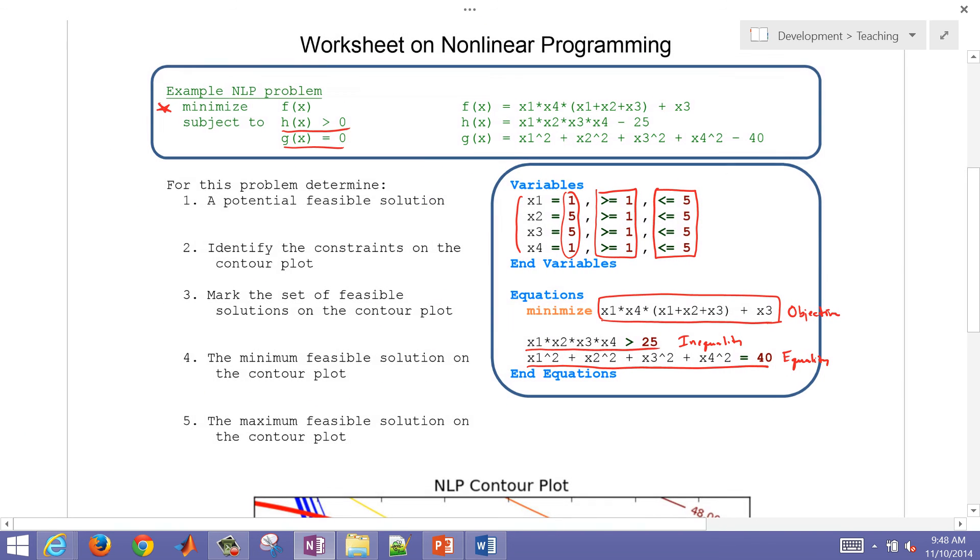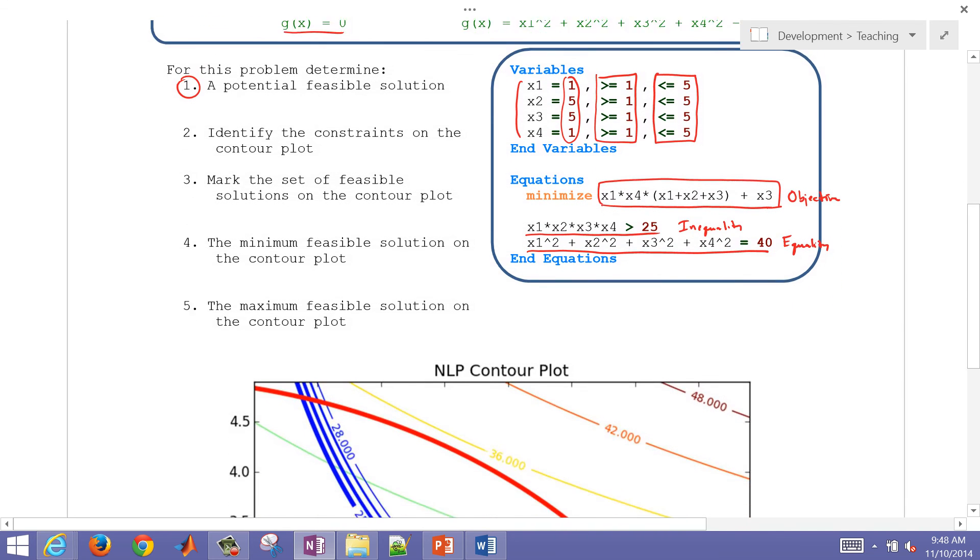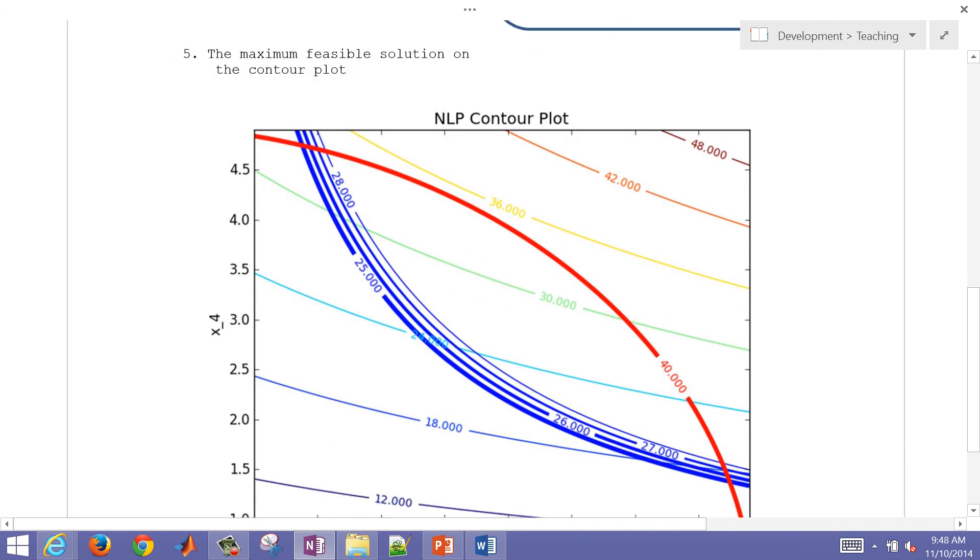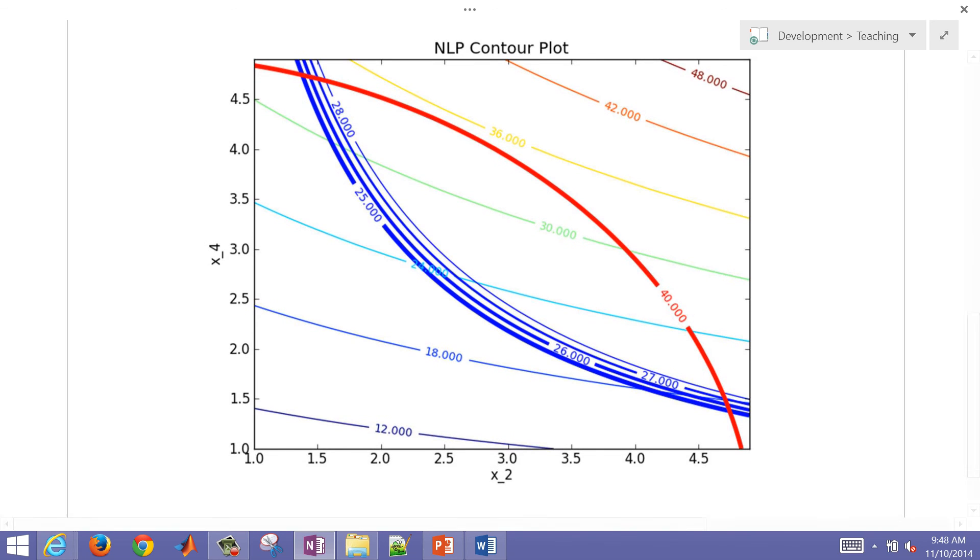For this problem, we're going to plot a potential feasible solution. I'm going to come down here to a contour map. This is the sum of the squares, sum i equals 1 to 4, and we're squaring these and adding them together, and that equals 40.